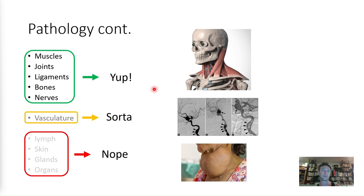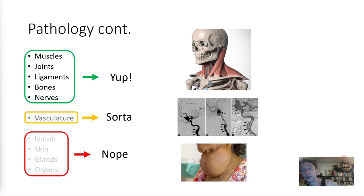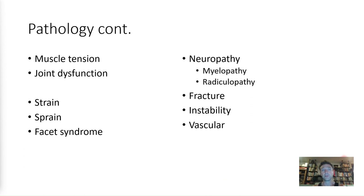I'm going to touch briefly on vasculature because it's important to understand how certain therapies could affect it — specifically cervical manipulation and its ties to arterial dissections and strokes, and whether that fear is legitimate. Things we won't cover here include lymph, skin, glands, and organs. That stuff comes up in other areas of your education. Let's look at the general pathology list.